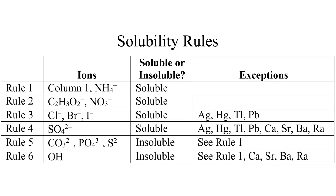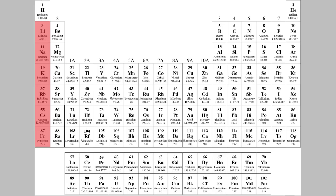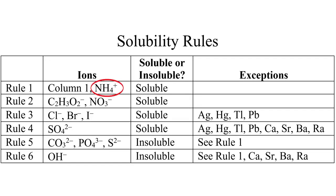The first rule is that any compound that has a cation from the first column of the periodic table is soluble in water — so that's every ionic compound that has elements including sodium and potassium. Also, any compound with ammonium ion as the cation is soluble. The second rule is that all compounds that have an anion of nitrate or acetate are soluble, no matter what the cation is.